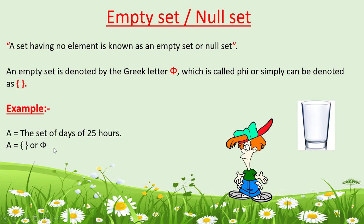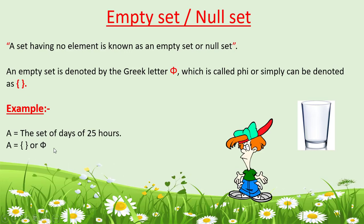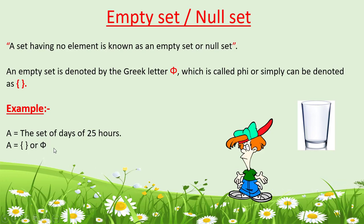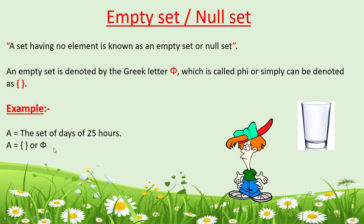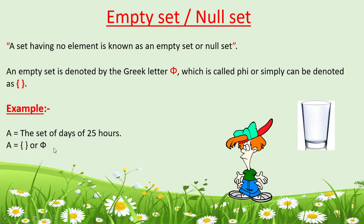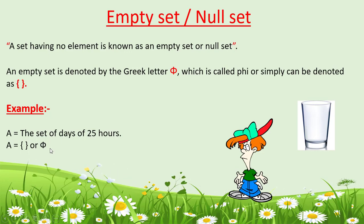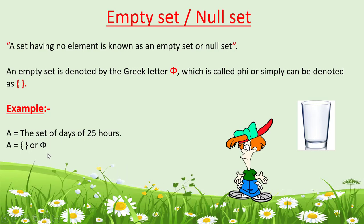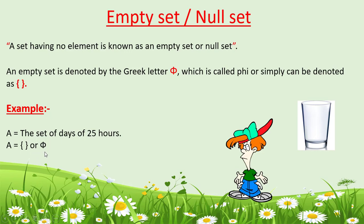For example, A is the set of days of 25 hours. As you know, there are only 24 hours in a day, so we cannot write a single element for this set. Therefore, this is an empty set, denoted by {} or by the Greek letter phi (φ).